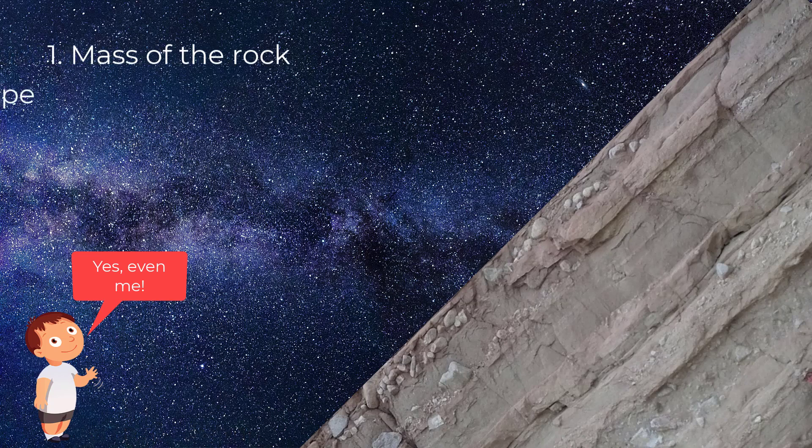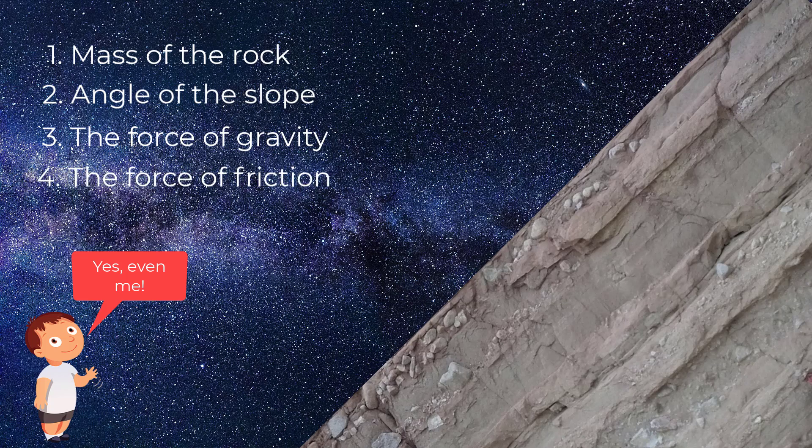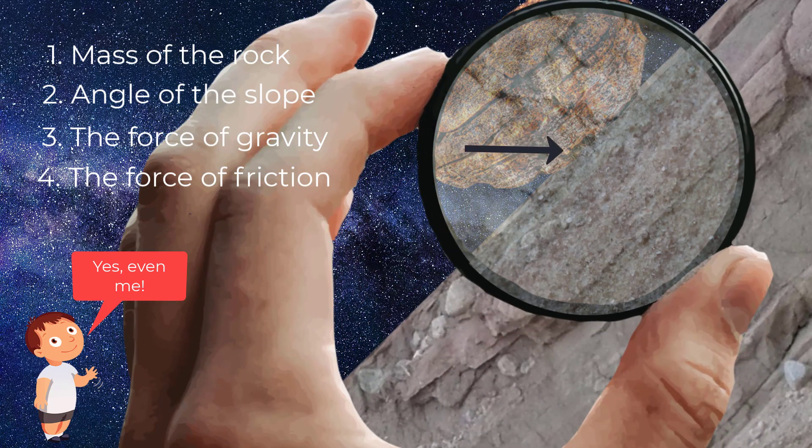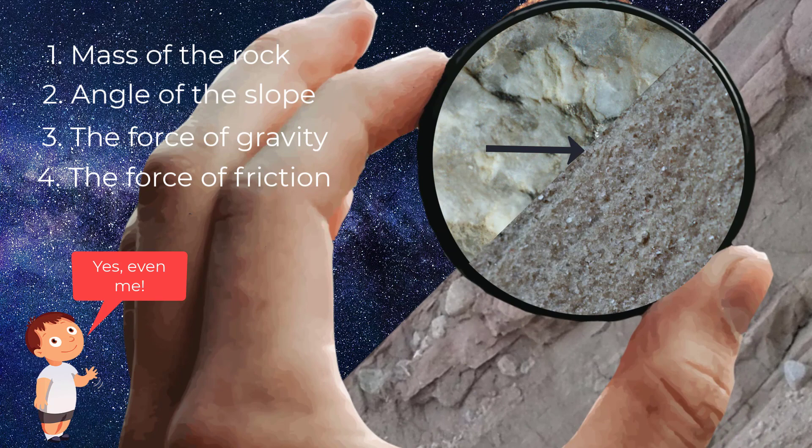One, the mass of the rock. Two, the angle of the slope. Three, the force of gravity. And four, the amount of friction produced when these two surfaces move past each other.